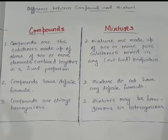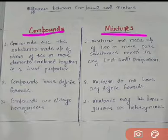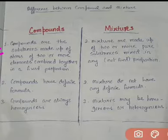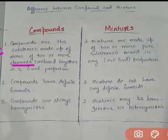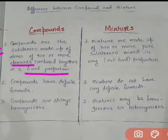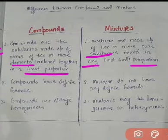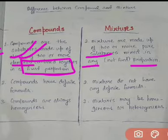Talking about compounds and mixtures, let us see the very first difference, which will be their definition. Compounds are substances that are made up of atoms of two or more elements combined together in a fixed proportion. But talking about mixtures, they are made up of two or more pure substances mixed in any proportion — their proportion is not fixed, whereas in the case of a compound, the proportion is fixed.